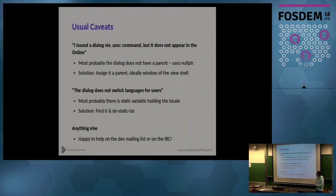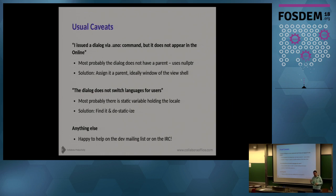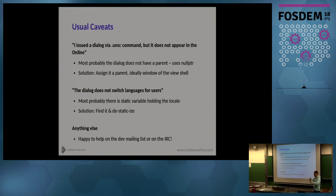Usual caveats: thanks to doing everything in VCL, most dialogues just work out of the box — you issue a command and the dialogue appears. It doesn't appear when the parent is null, because in that case the lock notifier isn't set. Usually it's enough to set the parent to the window of the view shell. If the dialogue doesn't switch languages for the user, you need to find the place where there's a static variable. Any questions?